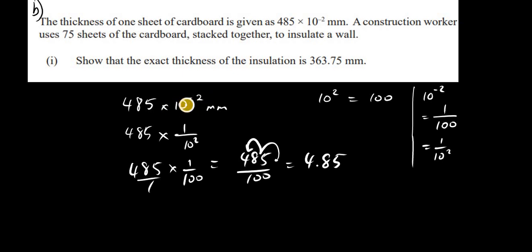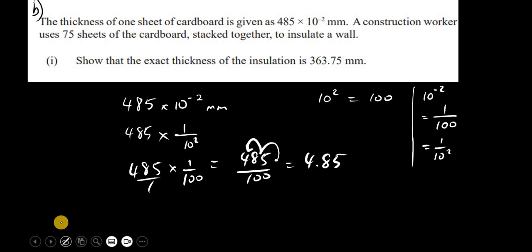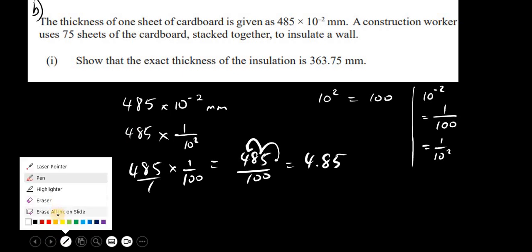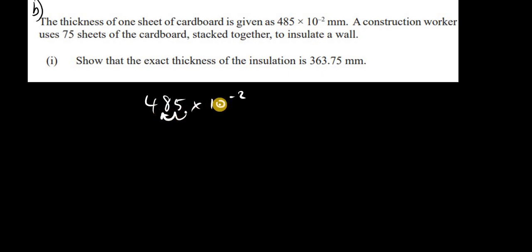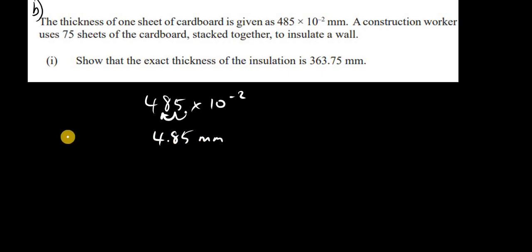A quick rule: if it's a positive power of 10, move the decimal point to the right. Because it is a negative power of 10, we move 2 places to the left — so that gives us 4.85 millimeters as the thickness of one sheet.